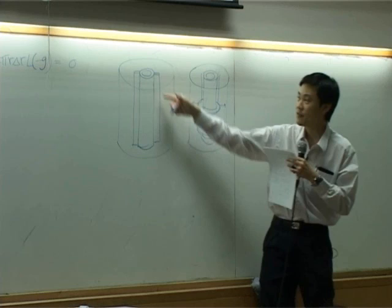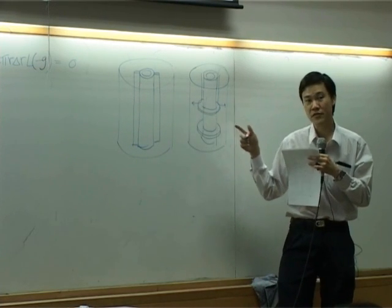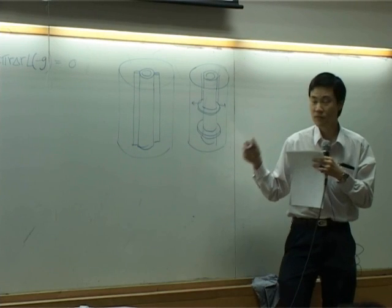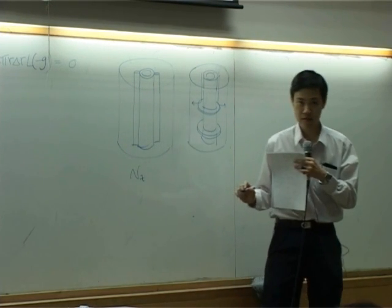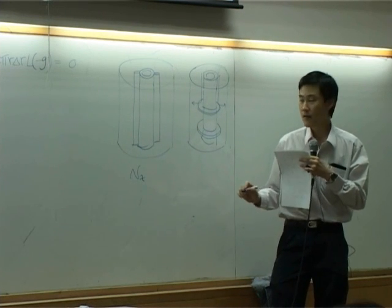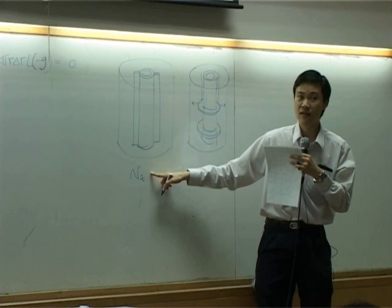So back to this question, the fin like this does it cause the velocity to go in r direction? No. So here in this problem you still have Vz only, right? But Vz may not be a function of z alone.